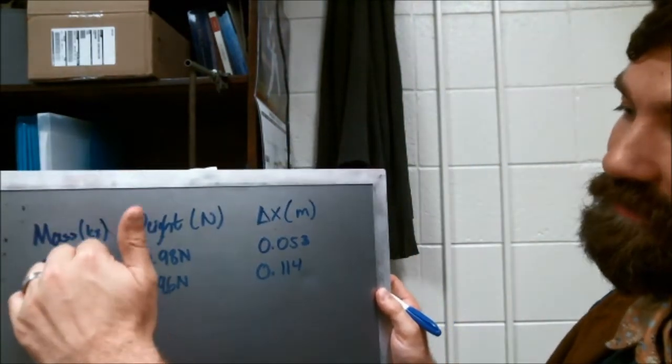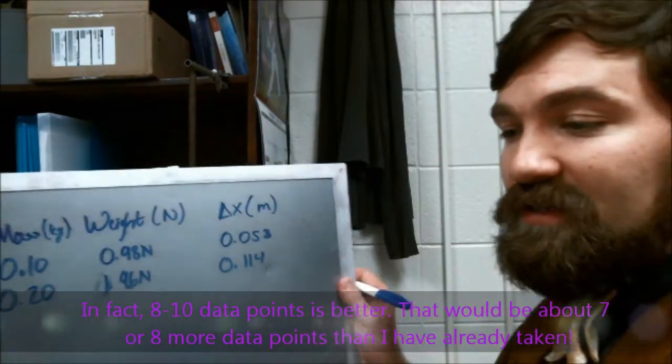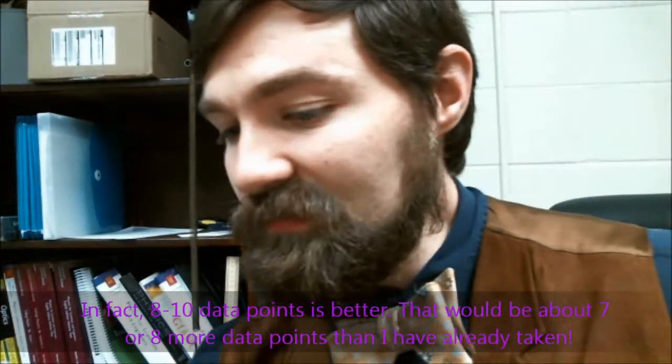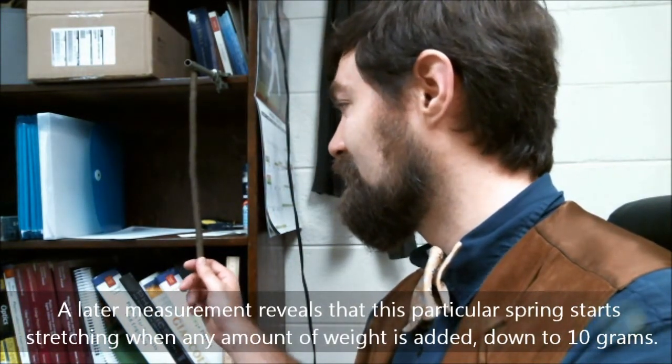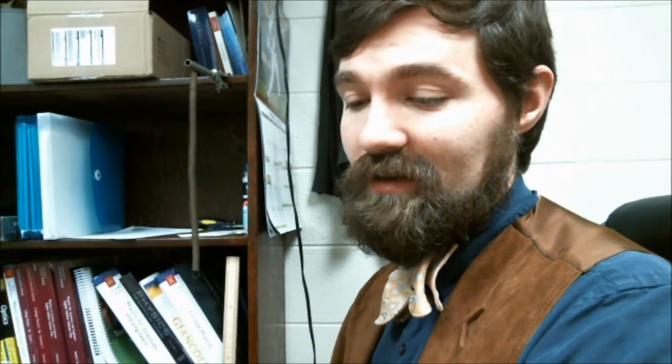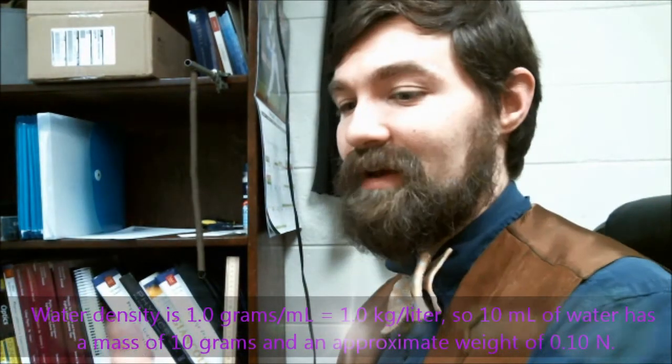I need to take enough data that I have maybe seven or eight data points for this graph. In the instructions you're also supposed to find how much weight you can add before it starts stretching at all. You can do this from home by taking the empty soda bottle, suspending it from the end of this, and then adding a little bit of water until you notice that it starts to stretch. Once that happens you can find the volume of water, from that the mass, and from that the weight.